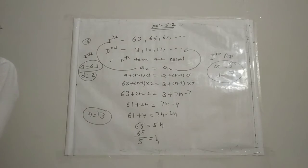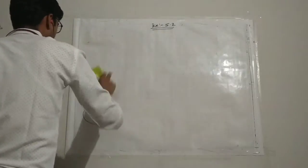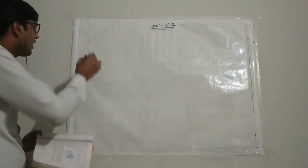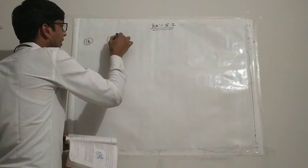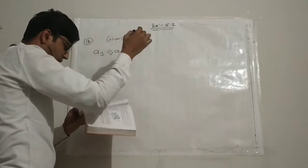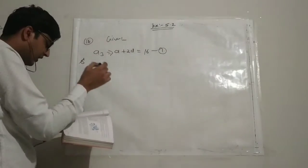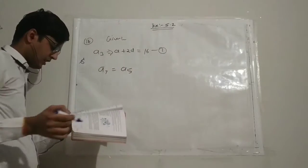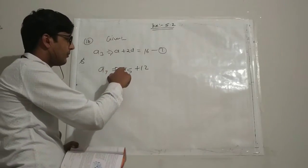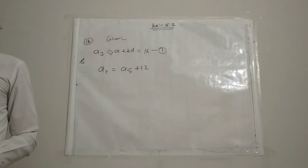Question number 16: Determine the AP whose third term is 16. Given that the third term A3 equals a plus 2d equals 16 — this is equation one. Also given that the 7th term exceeds the 5th term by 12, meaning A7 minus A5 equals 12.